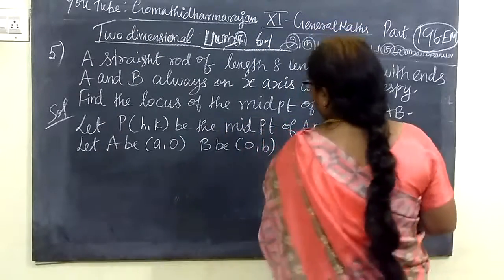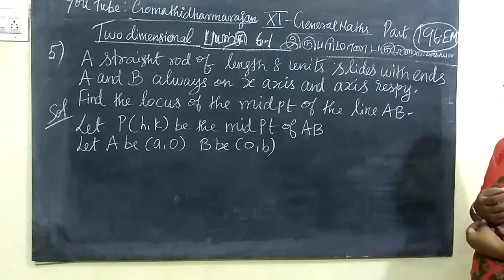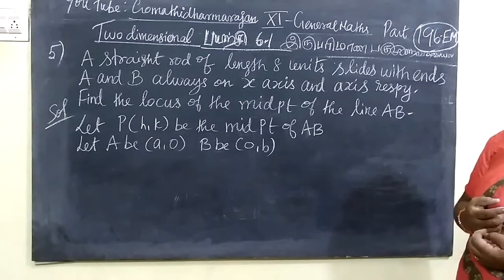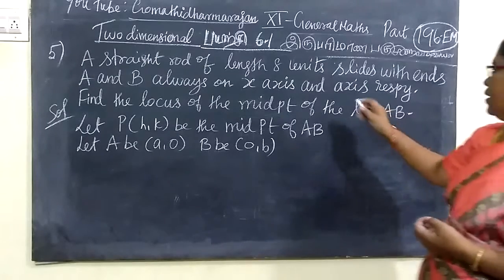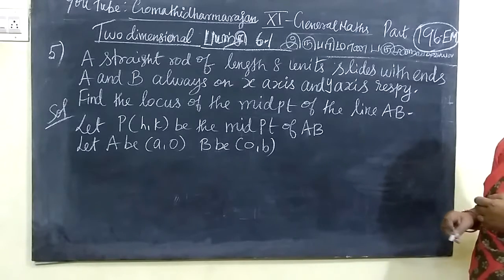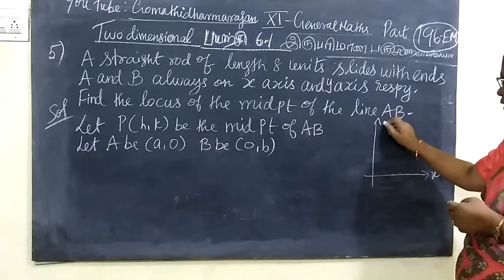You have given a straight rod of length 8 units with endpoints A and B lying on the x-axis and y-axis respectively. Find the locus of the midpoint of the line AB. You have given the x-axis and y-axis.